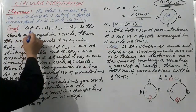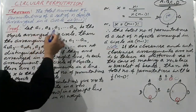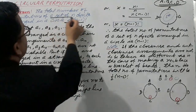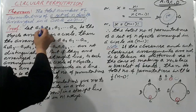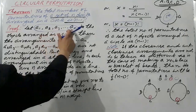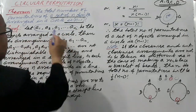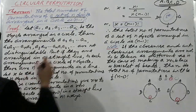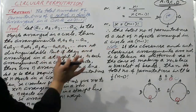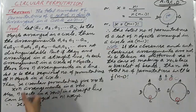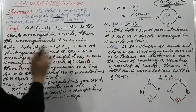Here in the first slide I have written the same thing. Let A1, A2, A3, ..., AN be the N objects arranged in a circle. The arrangements: first, A1, A2, A3, ..., AN — one reading; then A2, A3, ..., AN, A1 — second reading; and so on. Similarly, you can read N times.